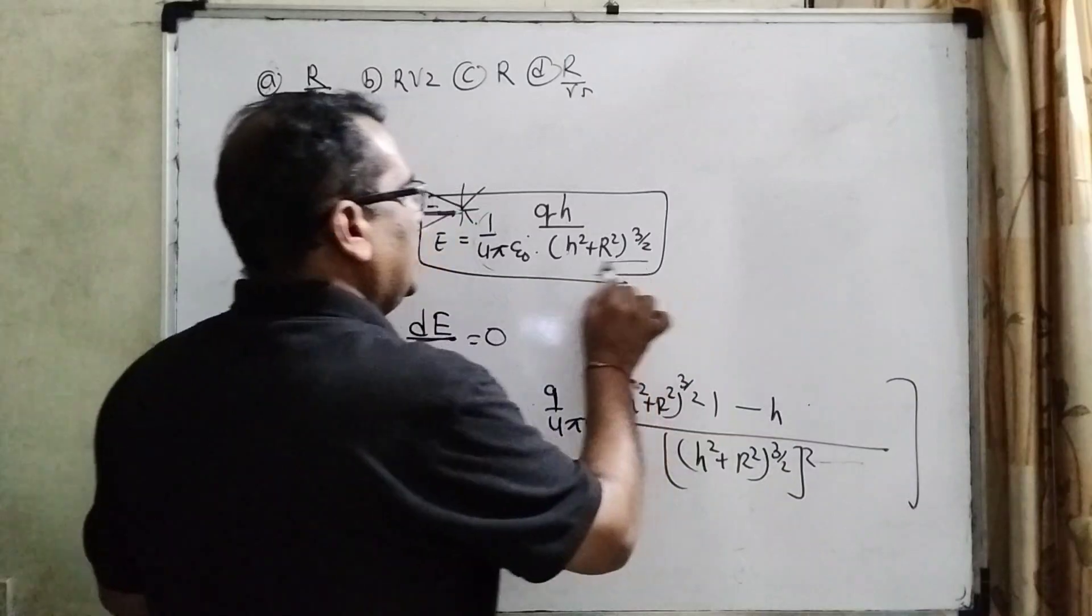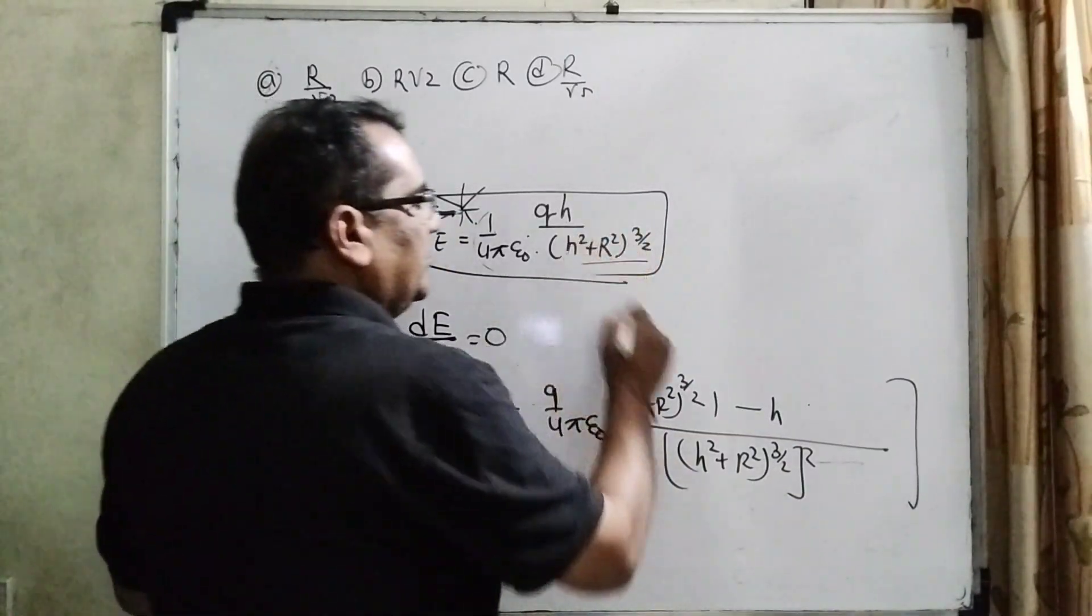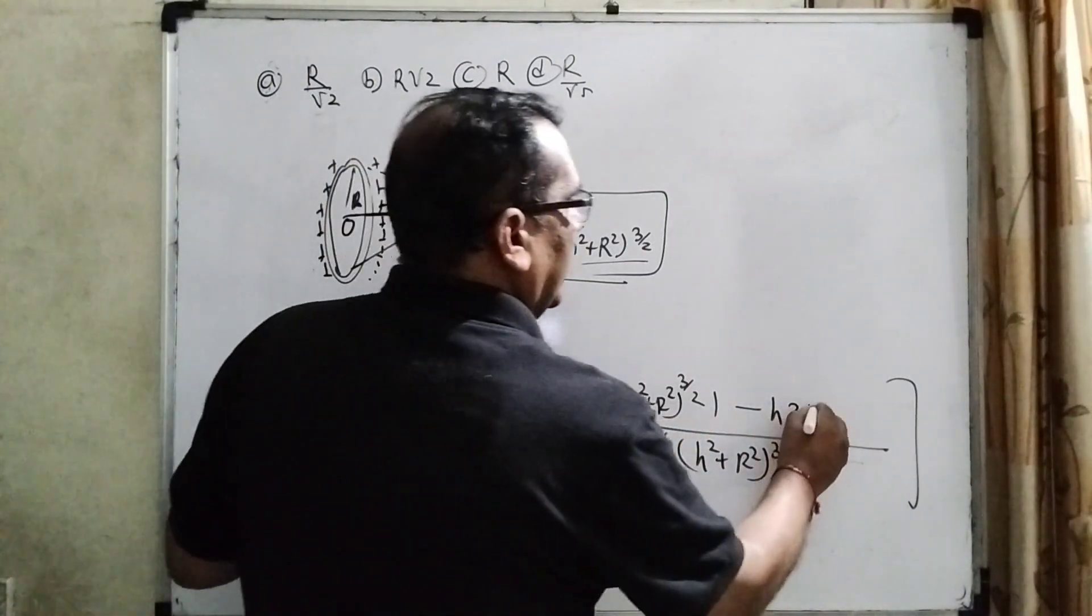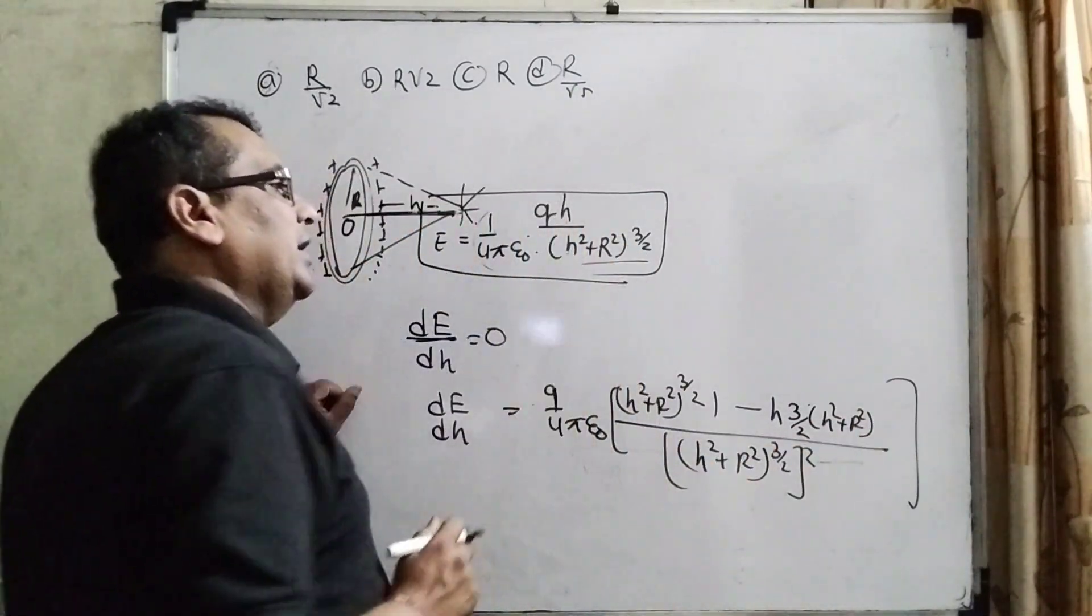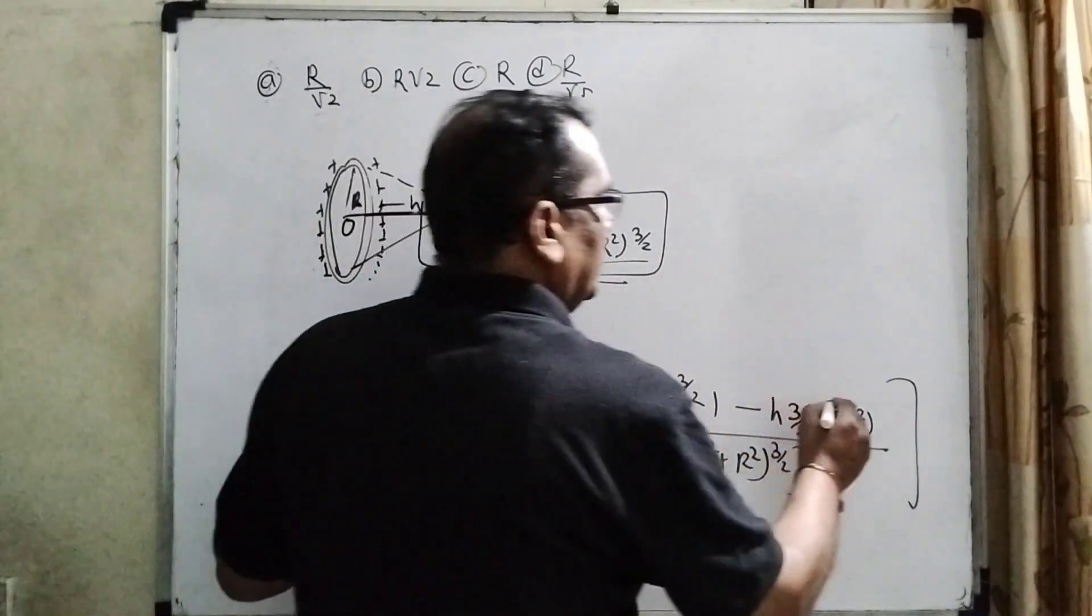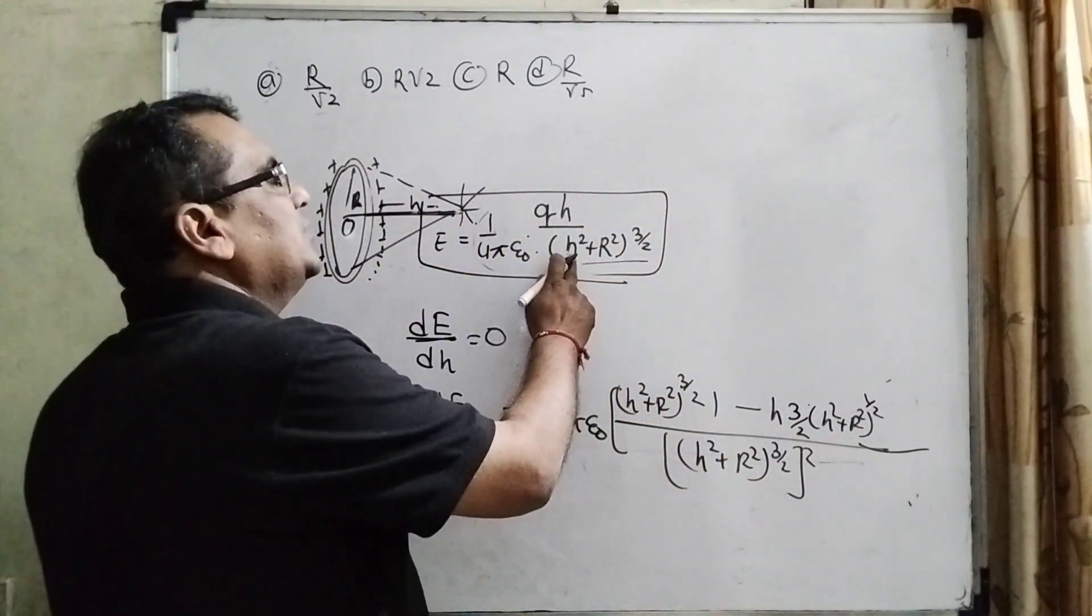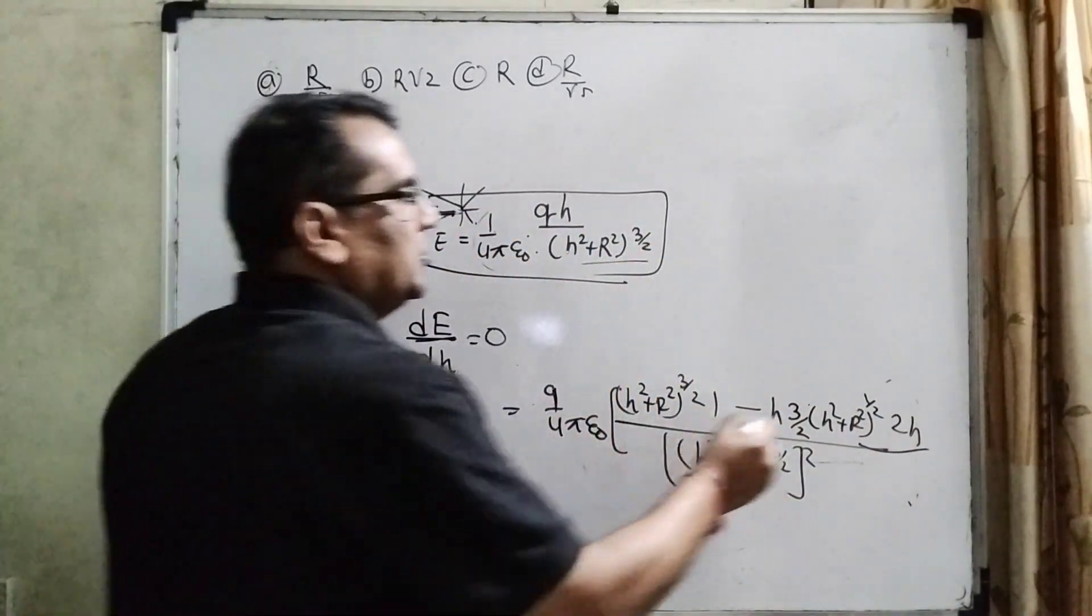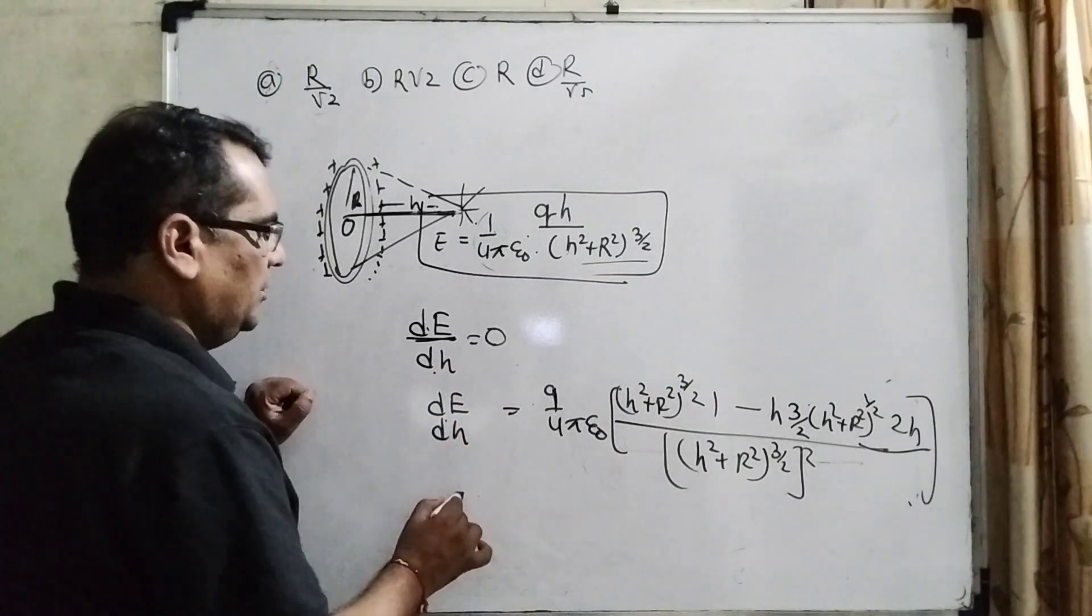And what is the numerator? h differentiated with respect to h is 1, minus h put as it is. Here differentiation of this term using the chain rule: 3/2 comes forward, 3/2 (h² + R²), 3/2 minus 1 means 1/2. And again, differentiate the inner term: h² becomes 2h and R² is 0. So therefore, this is the differentiation and dE/dh equals 0.